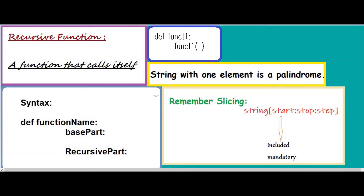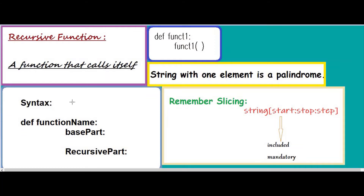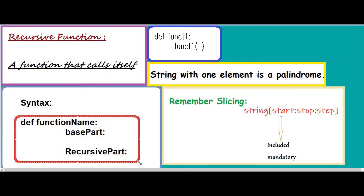A recursive function is a function that calls itself. For example, you define a function — 'def func_one' — and inside the body, this function is calling itself. That is a recursive function. This is the syntax: you will have the name of the function, and inside the body somewhere you will be using the name of the function again to call it. There are two parts in a recursive function: the base part and the recursive part.